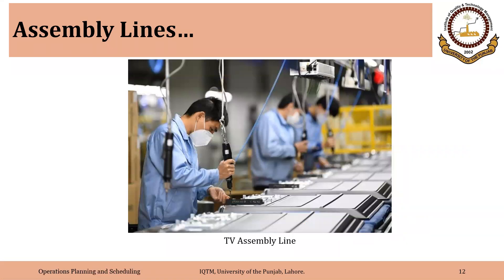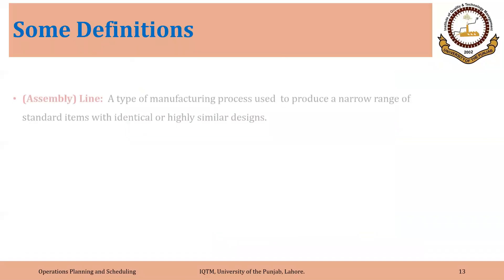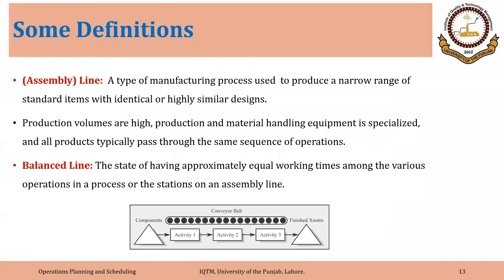Electronics assembly, like a TV assembly line, is another example. An assembly line is a type of manufacturing process used to produce a narrow range of standard items with identical or highly similar designs. Production volumes are high, production and material handling equipment is specialized, and all products typically pass through the same sequence of operations. A balanced line is the state of having approximately equal working times among the various operations in a process or the stations on an assembly line.